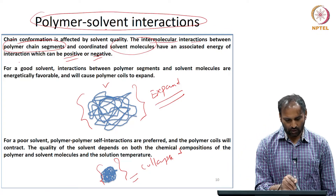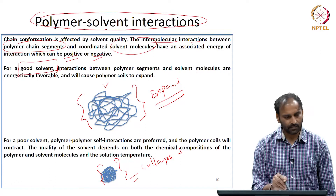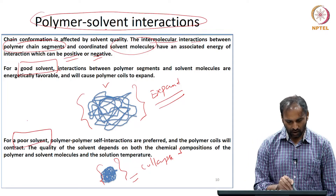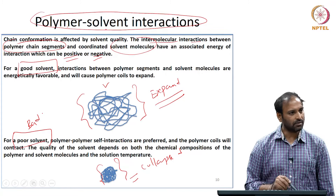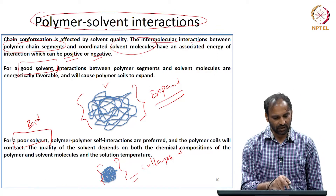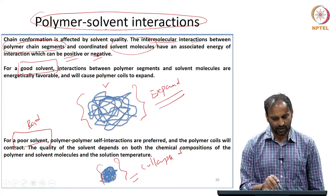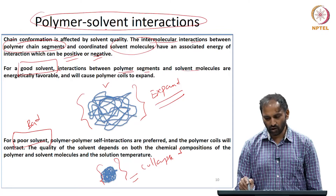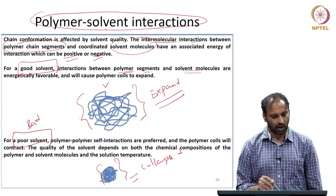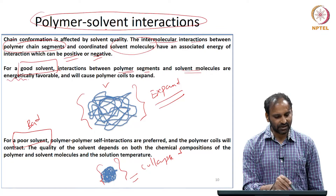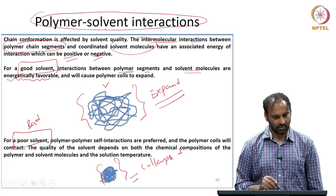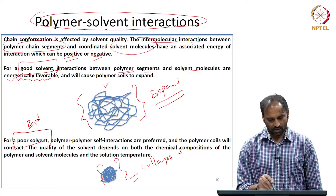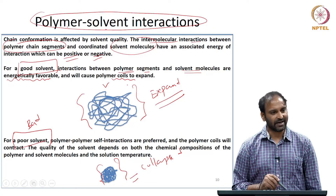People typically use terms like 'good solvent' and 'poor solvent' or 'bad solvent.' In the case of a good solvent, the interaction between the polymer segments and the solvent molecules are energetically favorable, and therefore it will cause the polymer coil to expand.